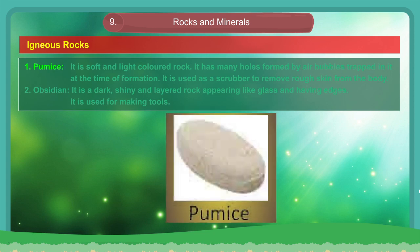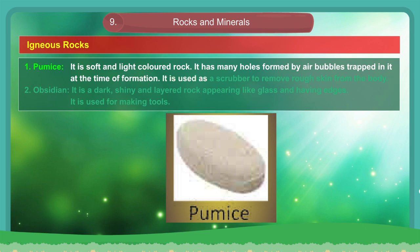1. Pumice. It is a soft and light-colored rock. It has many holes formed by air bubbles trapped in it at the time of formation. It is used as a scrubber to remove rough skin from the body.